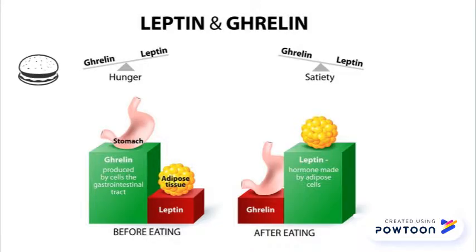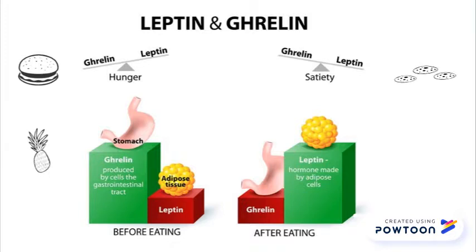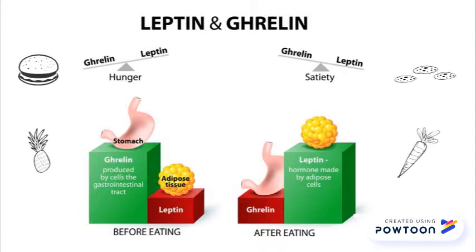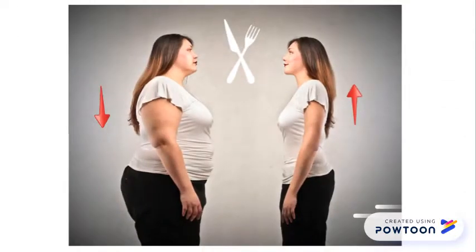Leptin is made up of fat cells and decreases your appetite, while ghrelin increases your appetite and helps control your body weight. If you weigh less, your leptin levels will be higher as your body tries to support itself.